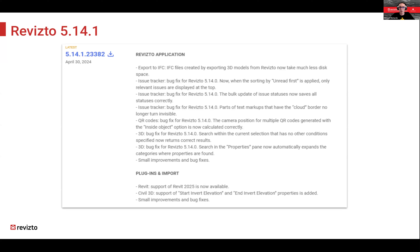Version 5.14.1 has just been made available this morning. There are a number of minor bug fixes for early adopters of 5.14: improvements to the Section Tool which behaved interestingly with clash results in the issue tracker, QR codes have had fixes to make sure the inside room function works correctly, and there are a small number of 3D bug fixes as well.